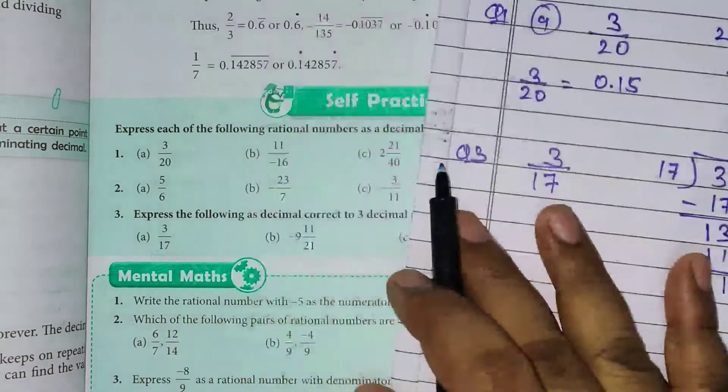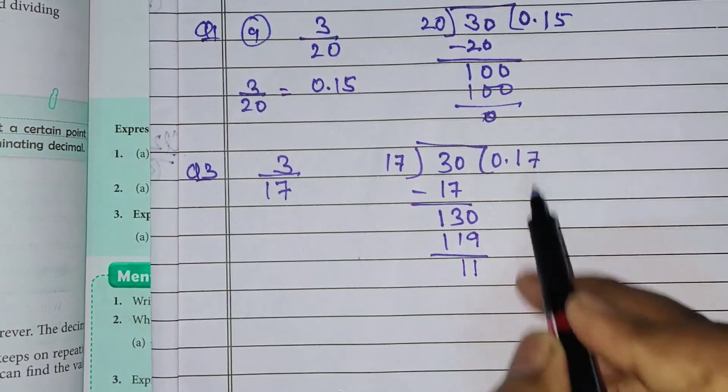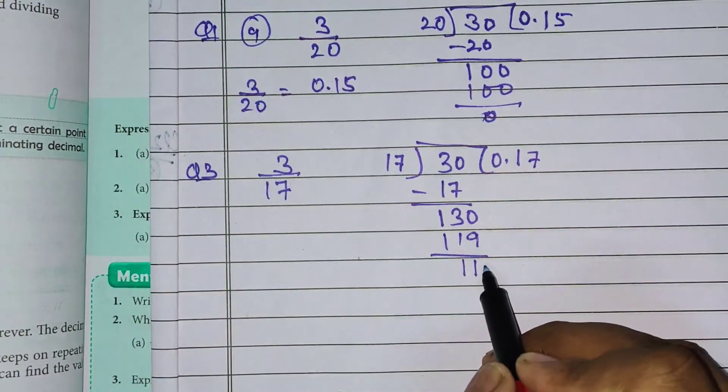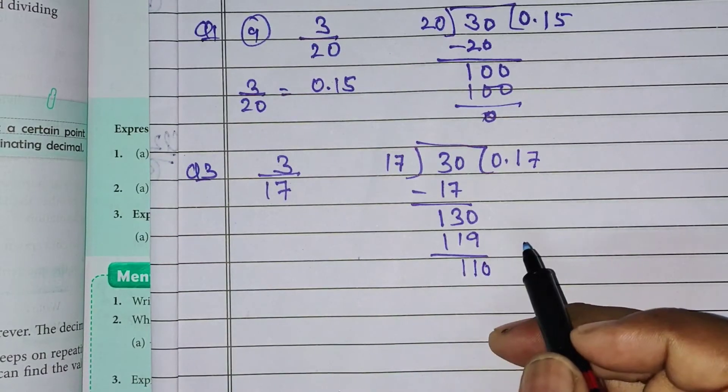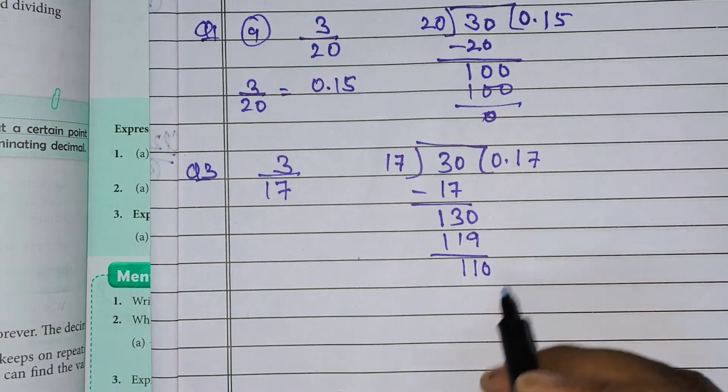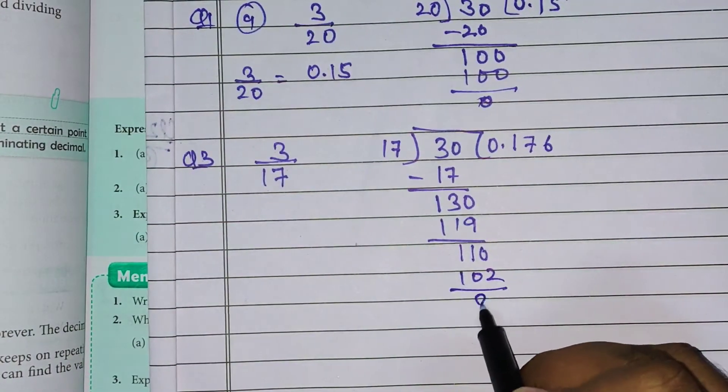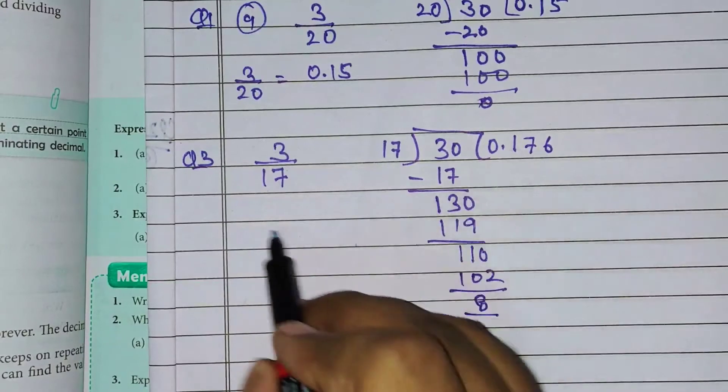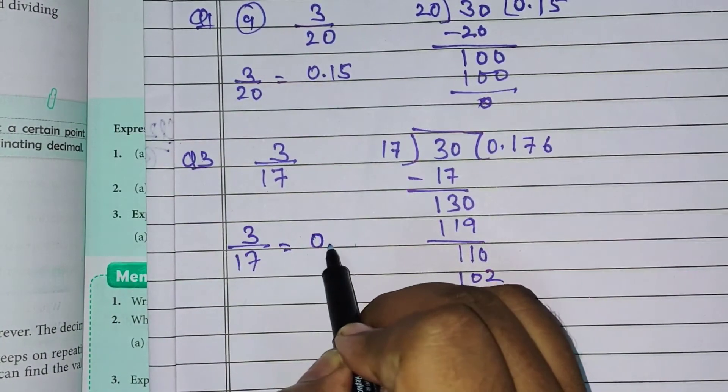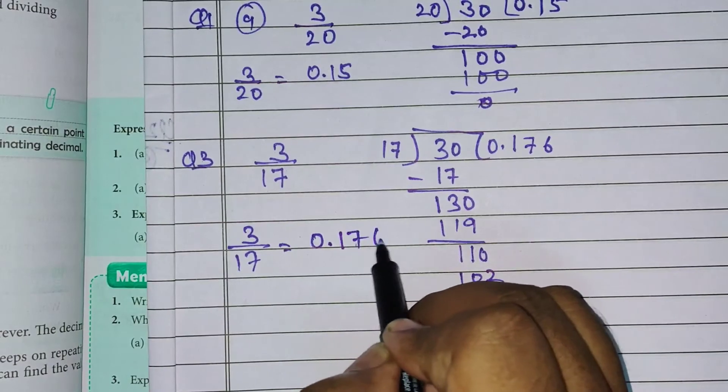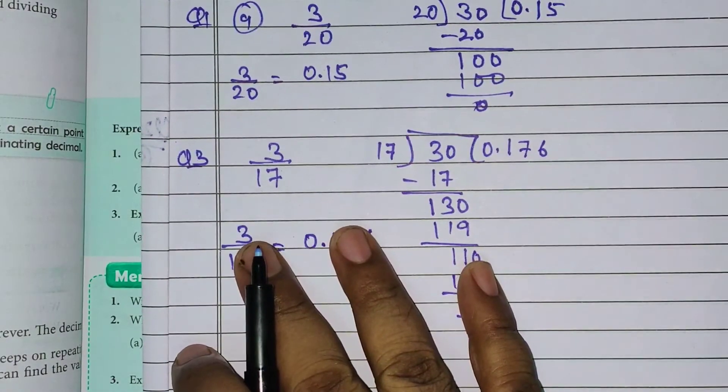Hameh 3 decimals tuk karna hai. Decimals ke baad 3 places. Yeh 7 hai. Phir bhi yeh isse chota hai, toh 0 place karenghe. Now 17, 6 jah hootah hai 102. 17 6 jah 102 remainder 8. Hameh 3 decimals tuk karna tha. Toh 3 upon 17 is equal to 0 decimal 176. Decimal ke baad 1, 2, 3 places ho ga hai.